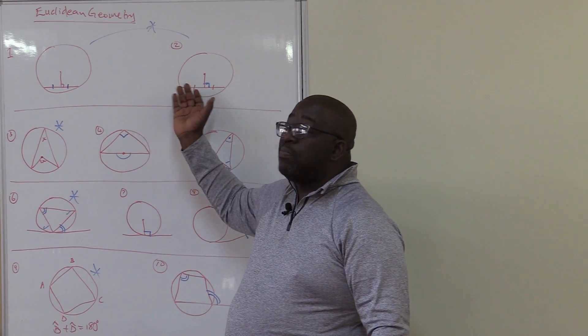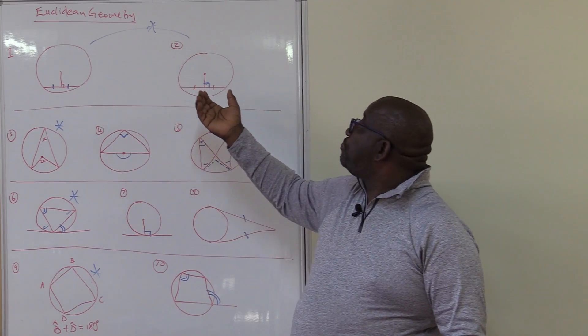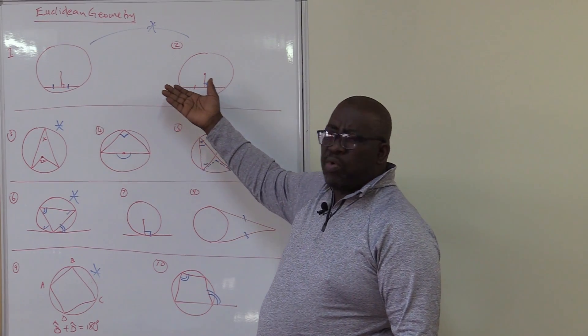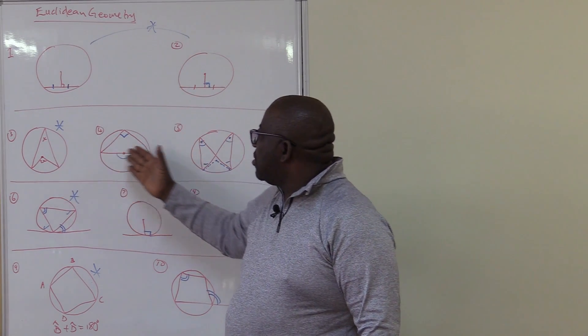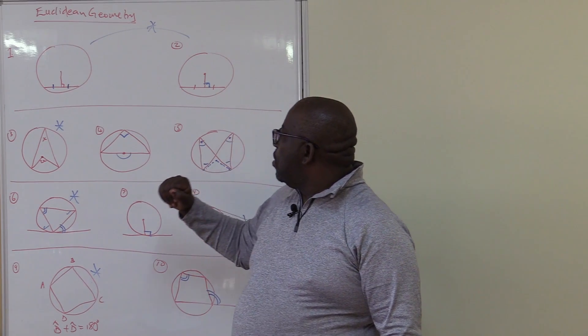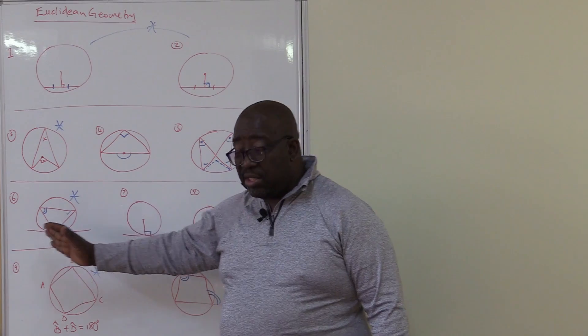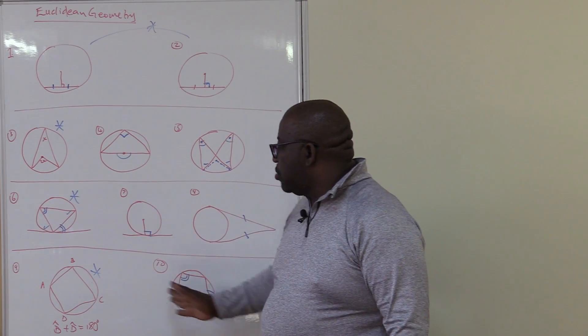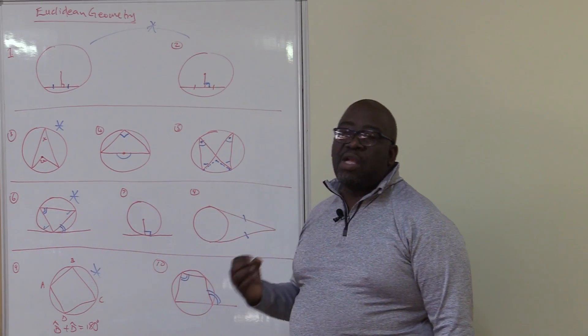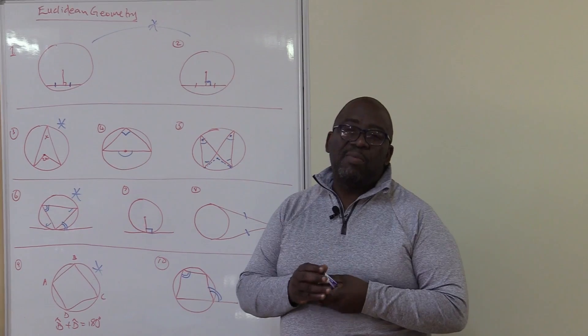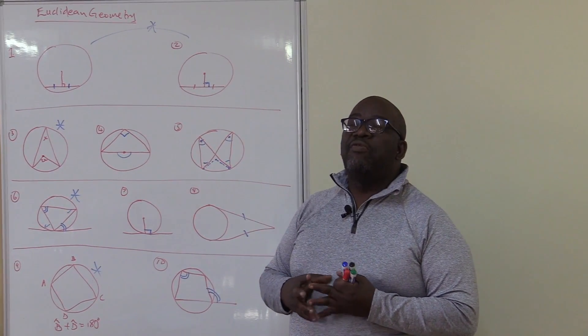Remember these 2 when you prove them. We said we use your grade 9 congruency. These 3 have something to do with the center. When they say something is the center you think of these 3 theorems. These 3 have something to do with the tangent. These 2 have something to do with the cyclic quadrilateral. So when you read your statement it will guide you to where you will find the solution.